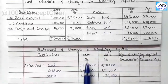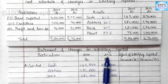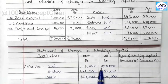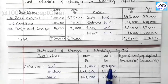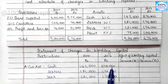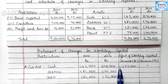First, we have cash. In 2015, we have 1,43,000 and in 2016, we have 2,70,000. The amount increases, so we take the difference: 2,70,000 minus 1,43,000 equals 1,27,000. This is an increase in the current asset amount, so we note 1,27,000 in the increase column.